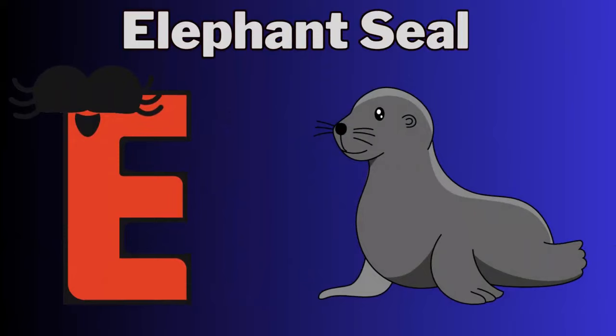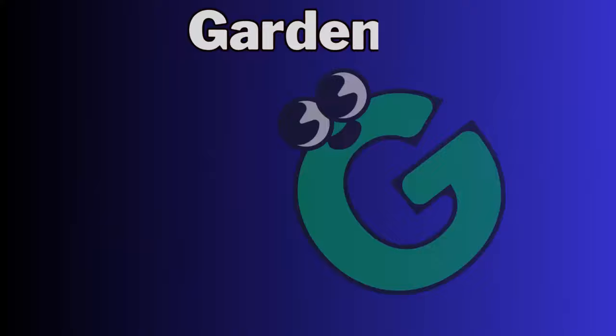E. E for elephant seal. F. F for flounder. G. G for garden eel. H. H for hermit crab.